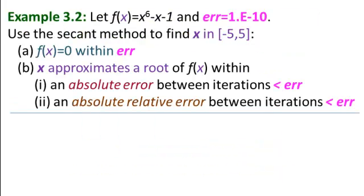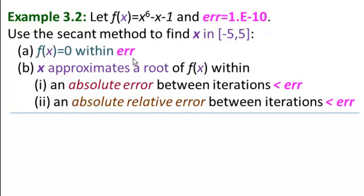In this video, we solve our second example for the secant method. Example 3.2: let f(x) equal x to the 6th minus x minus 1, and our error be 10 to the minus 10. Use the secant method to find x in minus 5. Part A: f(x) equals 0 within the error.